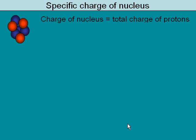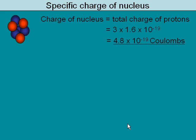If we were to work out the specific charge of just the nucleus and ignore the electrons, the total charge of the nucleus is simply the total charge of all the protons inside the nucleus. To work that out, you multiply by the charge of a proton or an electron — because remember, the proton charge and the electron charge are identical but opposite in sign. So the total charge of the nucleus is positive.